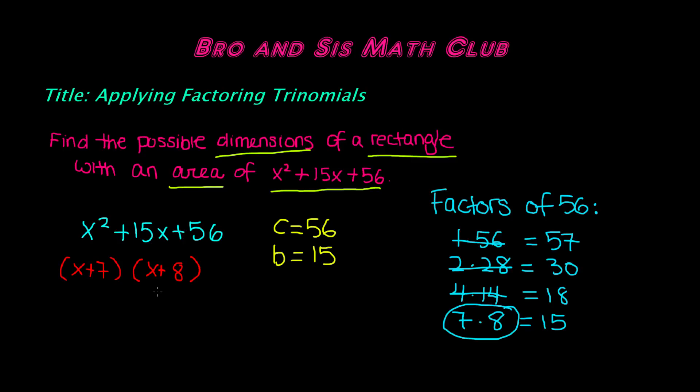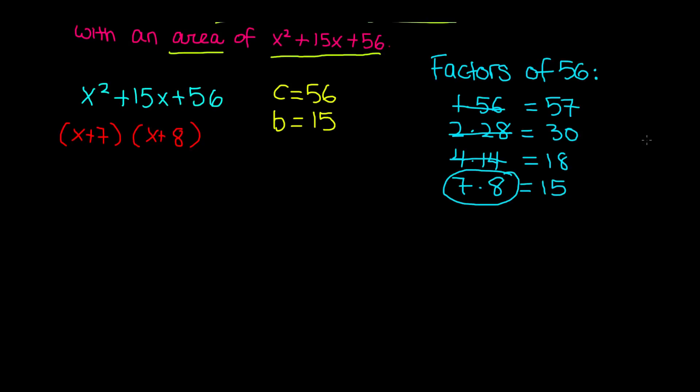Now if you need to check your answer, you can always apply the FOIL method. So if you scroll down a bit, and if you're going to do FOIL, x plus 7 and x plus 8, you're going to multiply x by x, you're going to get x squared, multiply x by positive 8, get positive 8x, 7 times x gives you positive 7x, and 7 times 8 gives you positive 56.